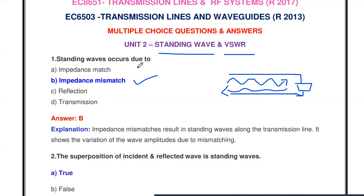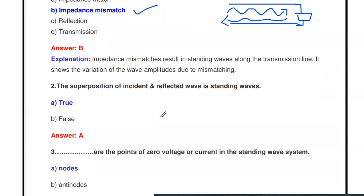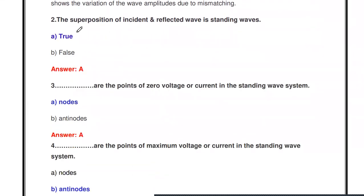So, the standing wave occurs when ZL is not equal to Z0 — that is impedance mismatch. If the load impedance equals the characteristic impedance of the transmission line, we will not get a standing wave. Standing waves occur due to impedance mismatch.